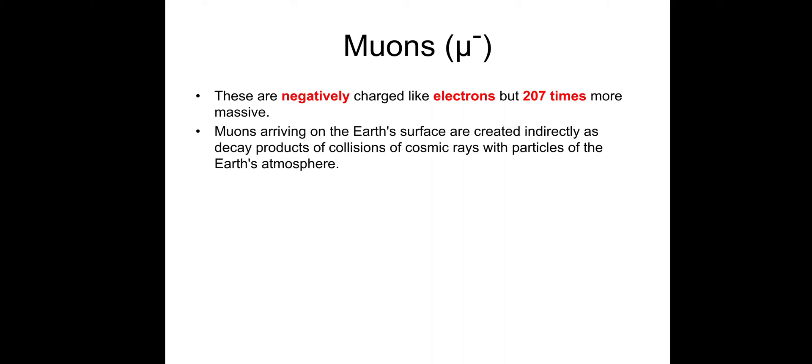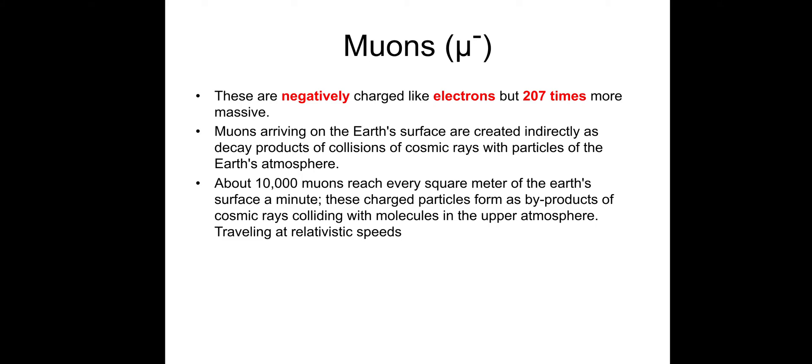Mu minus are negatively charged like electrons but 207 times more massive. Muons that arrive on the Earth's surface are created indirectly as decay products of collisions of cosmic rays with particles in the Earth's atmosphere. About 10,000 muons reach every square meter of the Earth's surface a minute. These charged particles form as byproducts of cosmic rays colliding with molecules in the upper atmosphere, travelling at relativistic speeds, which means very fast, a fraction of the speed of light.